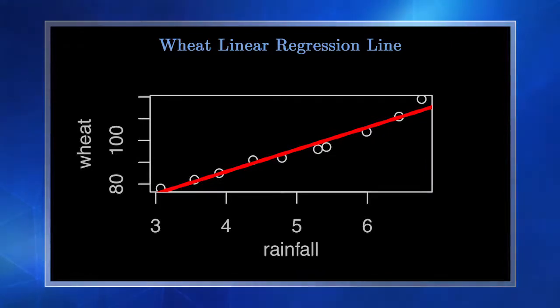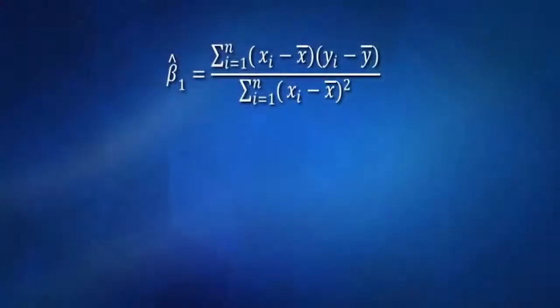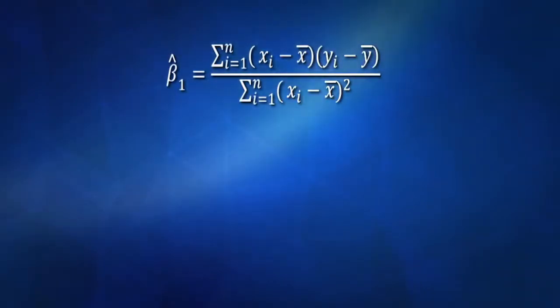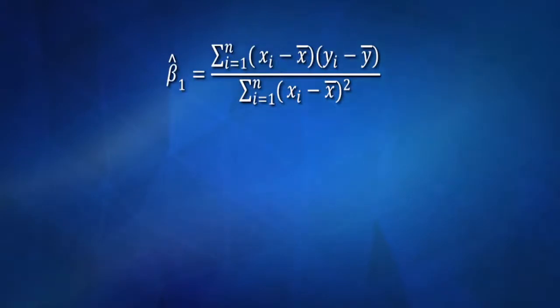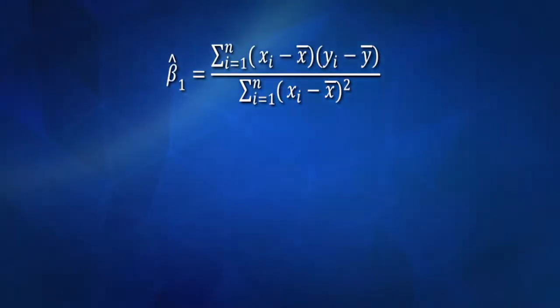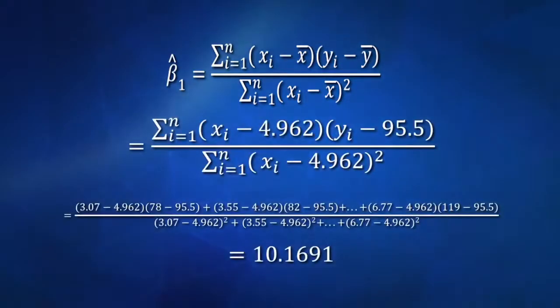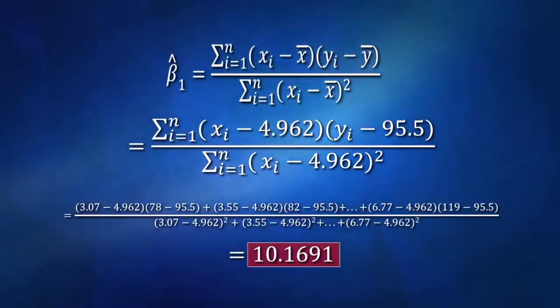How would we write out the equation of our linear regression line? For β̂₁, we said it equals sum of squares xy over sum of squares x: the sum from i=1 to n of (xᵢ − x̄)(yᵢ − ȳ) all over the sum from i=1 to n of (xᵢ − x̄)². When we plug in our x and y values we get 10.1691 — matching our result from R.